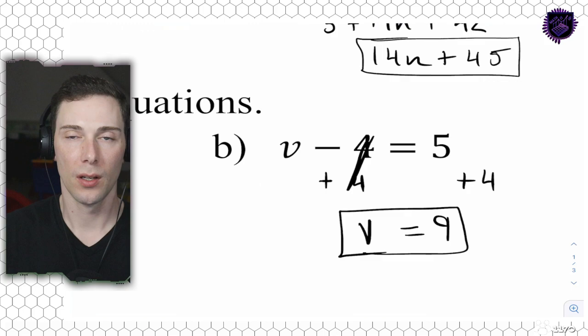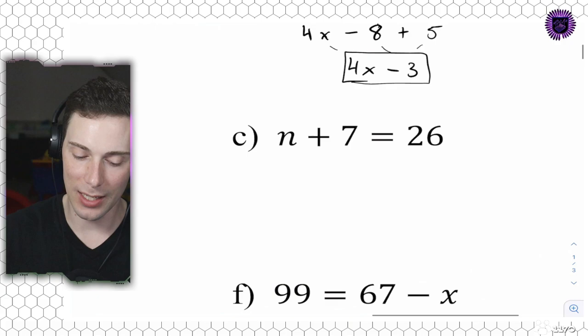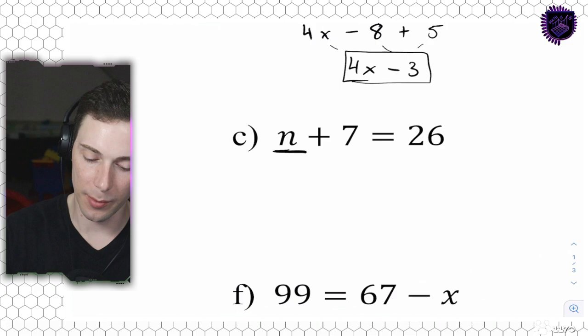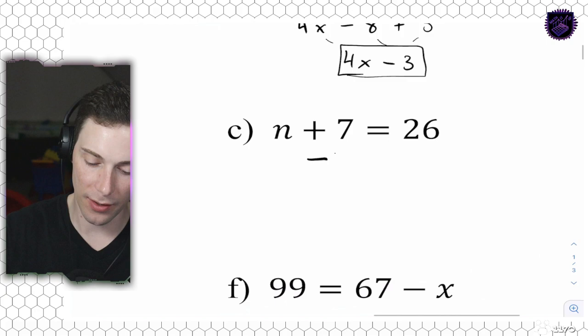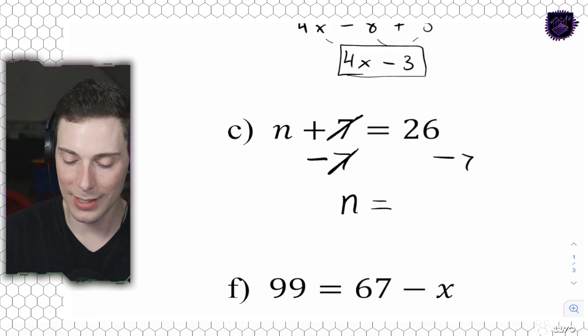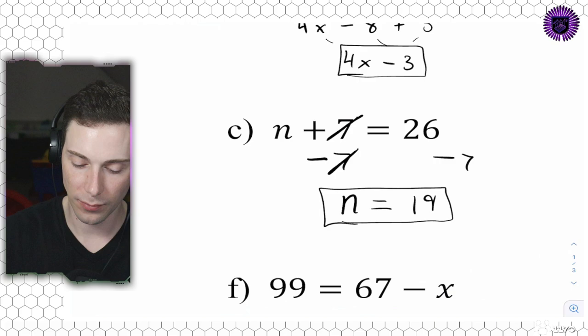Question 2C. The numbers are a little bit bigger, but same sequence of steps. We're going to isolate the variable - isolate N. What's happening to N? It's being added 7. We're going to subtract 7. On the opposite side, we also subtract 7. On this side it cancels out. We're left with N is equal to 26 minus 7, which is 19. That's our answer.